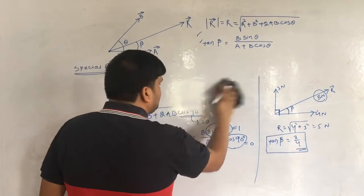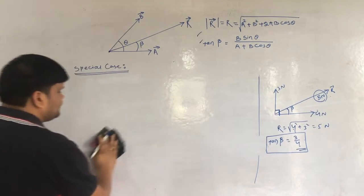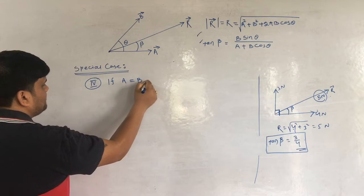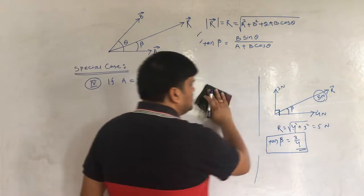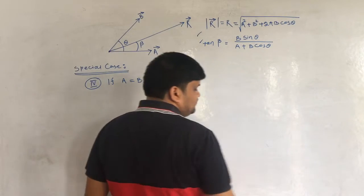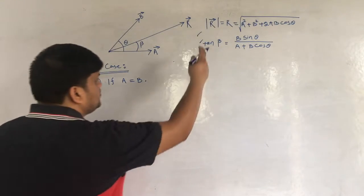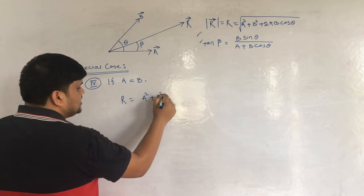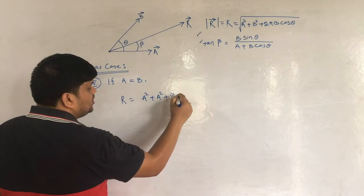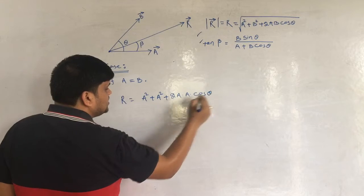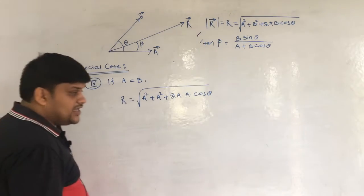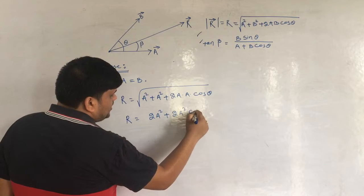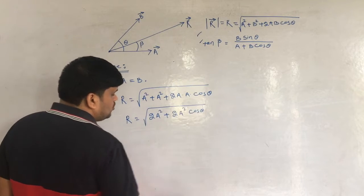Special Case 4: if A = B (equal magnitudes, any angle θ). Substituting B = A into the general formula: R = √(A²+A²+2A²cosθ) = √(2A²(1+cosθ)) = A√2 · √(1+cosθ).